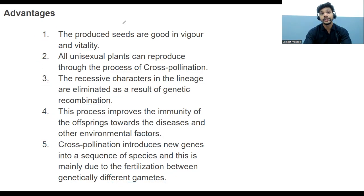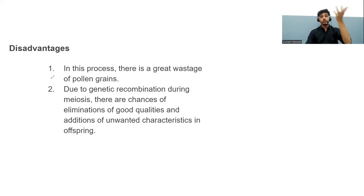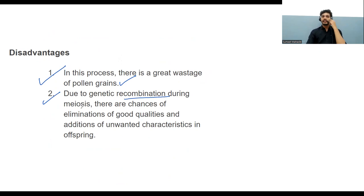The disadvantages of cross-pollination: there is a great wastage of pollen grains. However, the variation obtained leads to species that are more disease-resistant. During meiosis — which produces haploid cells, unlike mitosis which produces identical copies — there is a chance of elimination of good qualities and addition of unwanted characteristics. Bad variations can also occur alongside beneficial ones.